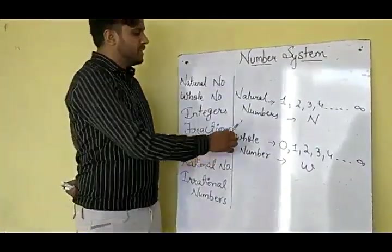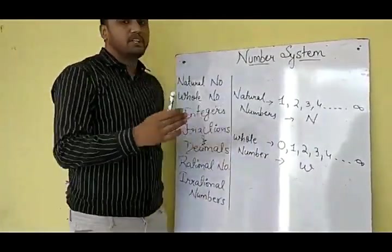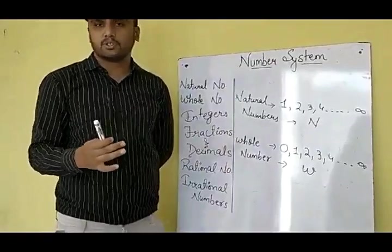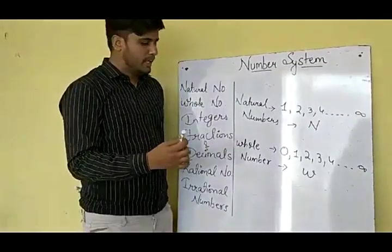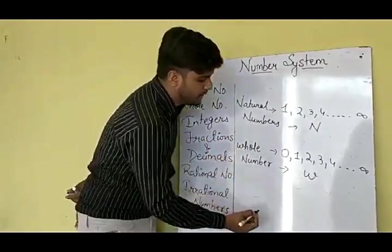Now, other than natural numbers and whole numbers, there was a need of some other numbers also. So for that, first of all, we will take an example.